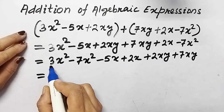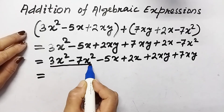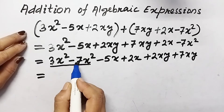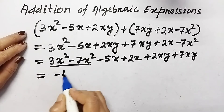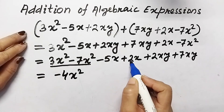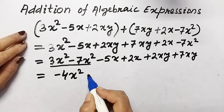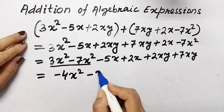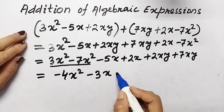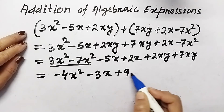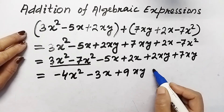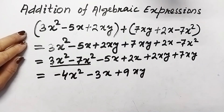Now we can add: 3x² plus negative 7x² gives negative 4x². For the x terms, negative 5 plus 2 equals negative 3x. For the xy terms, positive 2 plus positive 7 equals positive 9xy. So this is the sum of these two algebraic expressions.